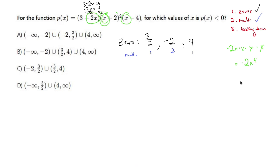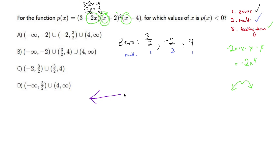What that looks like graphically — and the reason I do this — is I know this is going to look like an upside-down M. Not perfect, but accurate. Now I make myself a sign chart and label my zeros.